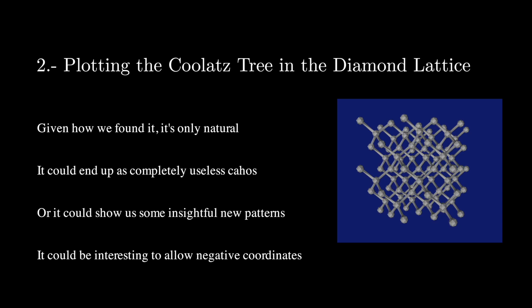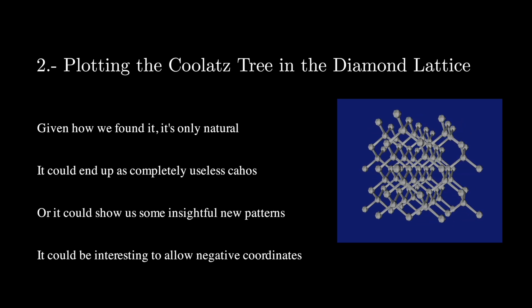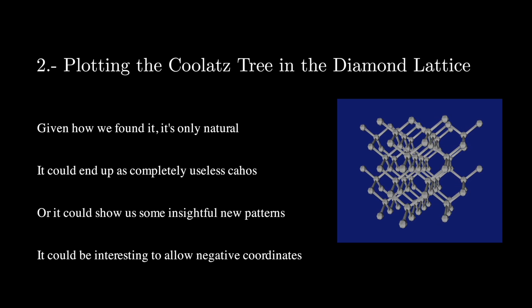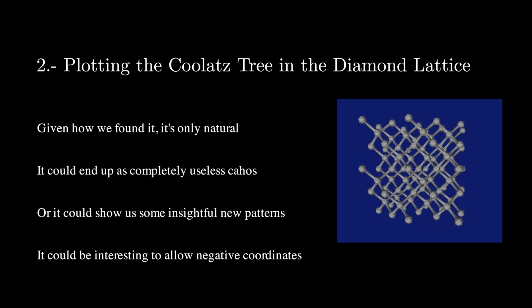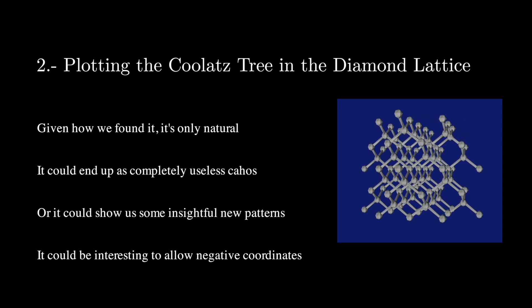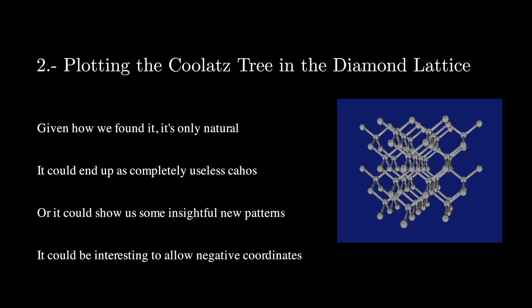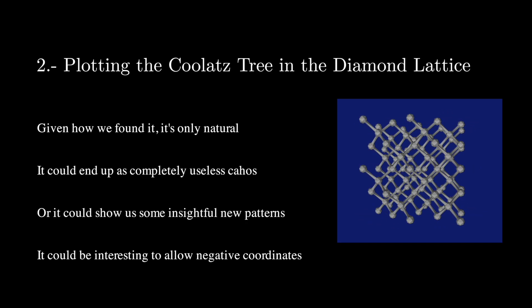The second one is about plotting the Collatz tree in a diamond lattice. I mean, it's right there, practically begging for someone to code it. In the end, it might look like pure chaos and we learn nothing from it, but who knows, maybe it has some interesting patterns. Also, you could try to plot it using negative coordinates.